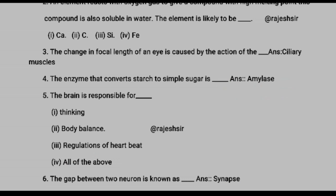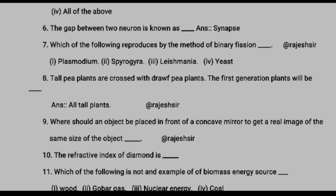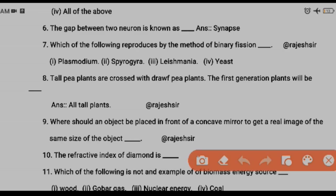Question seven: which of the following reproduces by the method of binary fission? Many organisms reproduce by binary fission — amoeba, Leishmania, and some bacteria. The correct option here is Leishmania, so option number three is correct.